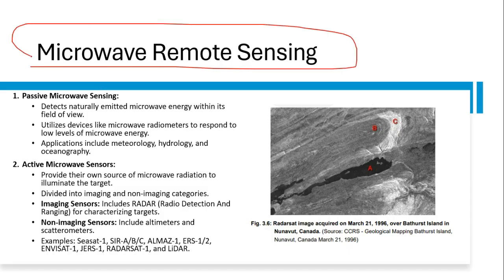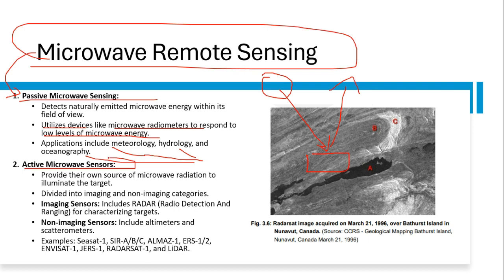Now we move to microwave remote sensing, which is of two types: passive and active. Passive microwave sensing detects naturally emitted microwave energy using devices like microwave radiometers, and is used in meteorology, hydrology, and oceanography. Active microwave sensors provide their own source of microwave radiation to illuminate the target — the satellite sends energy and captures the reflected energy. Active sensors are divided into imaging types (such as radar) and non-imaging types (such as altimeters and scatterometers).